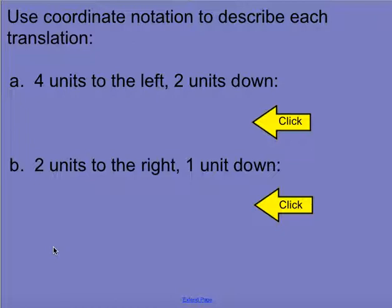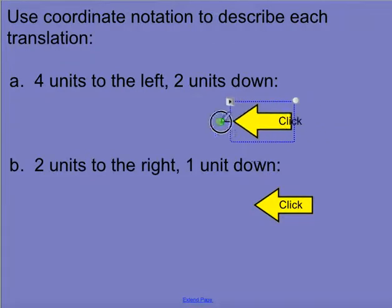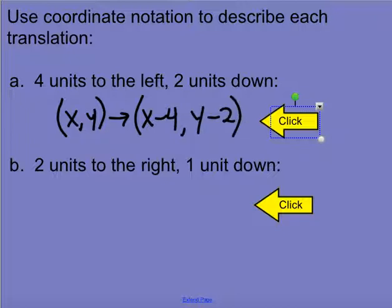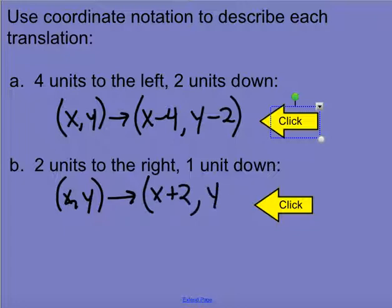Use coordinate notation to describe each translation. For 4 units to the left and 2 units down: left is negative and affects x, down is negative and affects y. So x, y goes to x minus 4, y minus 2. Similarly, for 2 units to the right and 1 unit down: right is positive, so x, y becomes x plus 2, y minus 1.